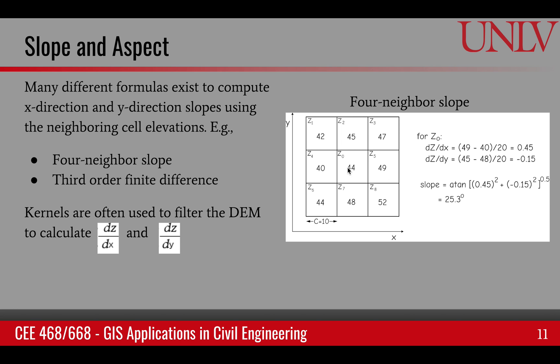In case of four-neighbor slope, for this given pixel, which is z0, we only use the north-south neighbors and east-west neighbors. The north-south neighbors will be used to compute dz/dy, and east-west pixels will be used to compute dz/dx.